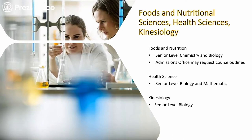Next, let's take a look at foods and nutritional sciences, health sciences, and kinesiology prerequisite requirements. It is important to note that Prussia issues alternate offers of admission. Should you be missing prerequisite requirements or not have a high enough academic average, you may receive an alternate offer to another program at Prussia, such as social sciences. For foods and nutrition, we look for senior level chemistry and biology. We may need to request course outlines or syllabi to ensure equivalency for first year. For health sciences, we look for senior level biology and math. For kinesiology, we look for a senior level biology course.